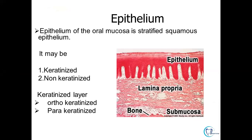When we talk about the epithelium of the oral cavity, we have to keep in mind that it is the stratified squamous epithelium in the oral cavity. It can be keratinized or it can be non-keratinized. Based on the pattern of keratinization, it can be further subclassified into orthokeratinized and parakeratinized.